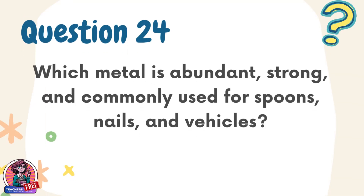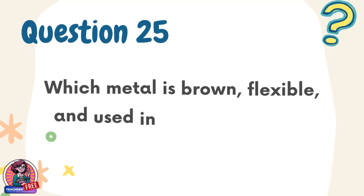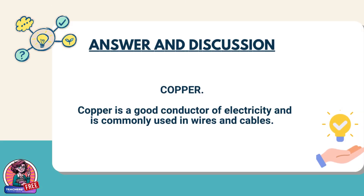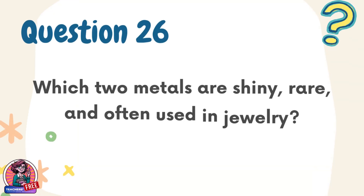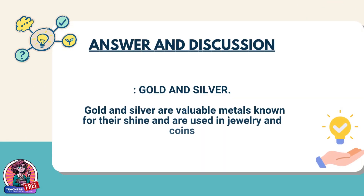Question 24. Which metal is abundant, strong, and commonly used for spoons, nails, and vehicles? Answer: Iron. Iron is a strong metal widely used in construction, tools, and household items. Question 25. Which metal is brown, flexible, and used in electrical wires? Answer: Copper. Copper is a good conductor of electricity and is commonly used in wires and cables. Question 26. Which two metals are shiny, rare, and often used in jewelry? Answer: Gold and silver. Gold and silver are valuable metals known for their shine and are used in jewelry and coins.